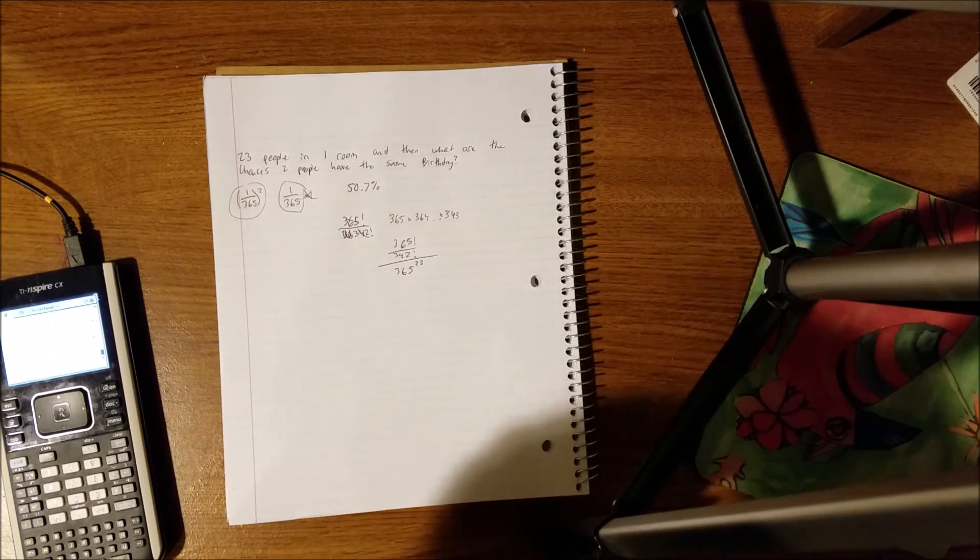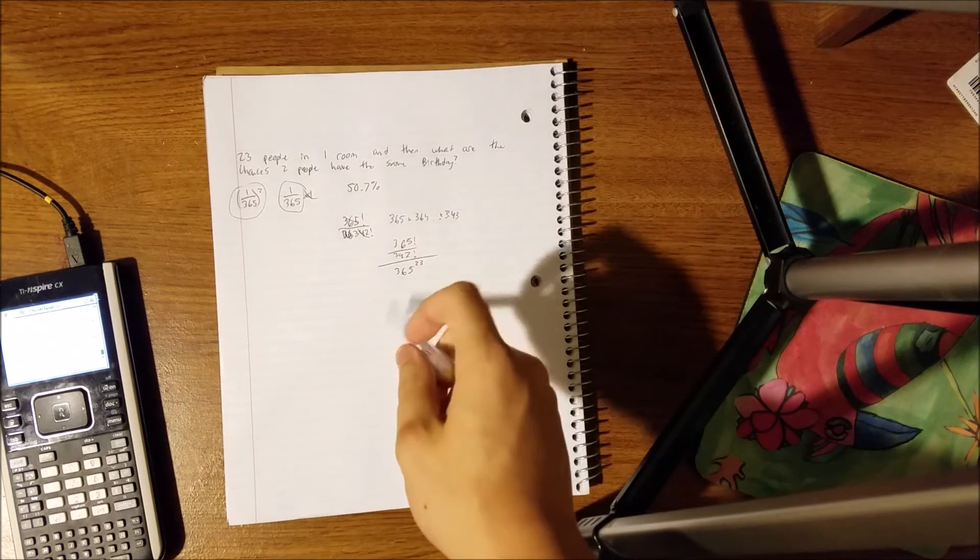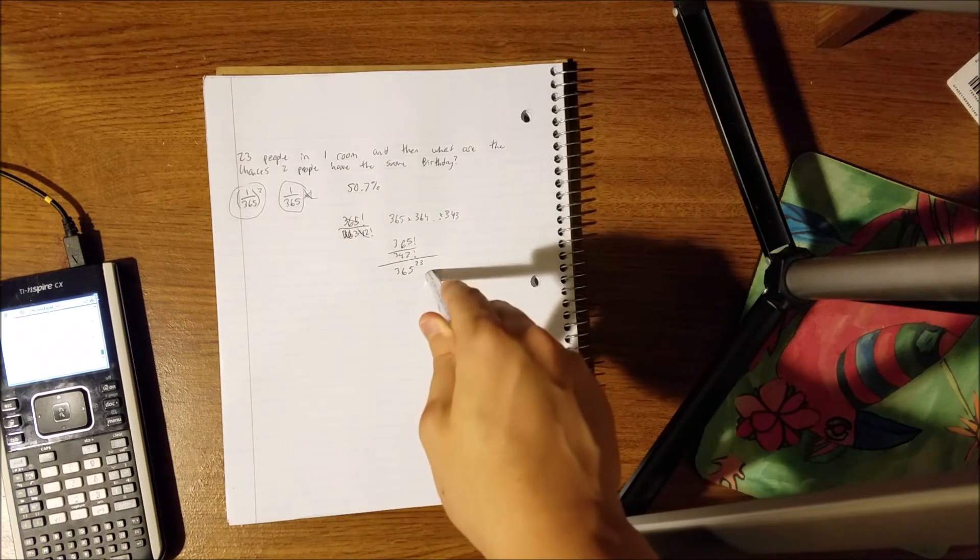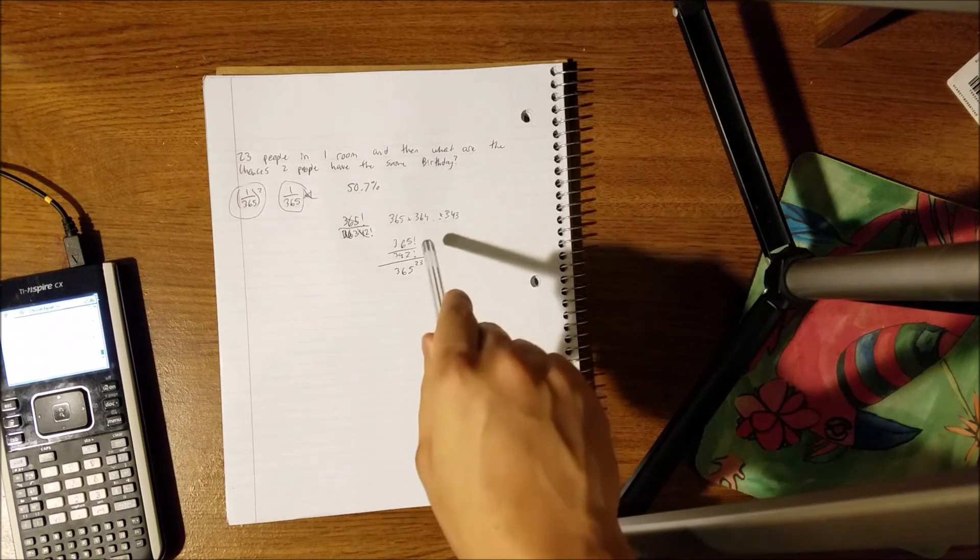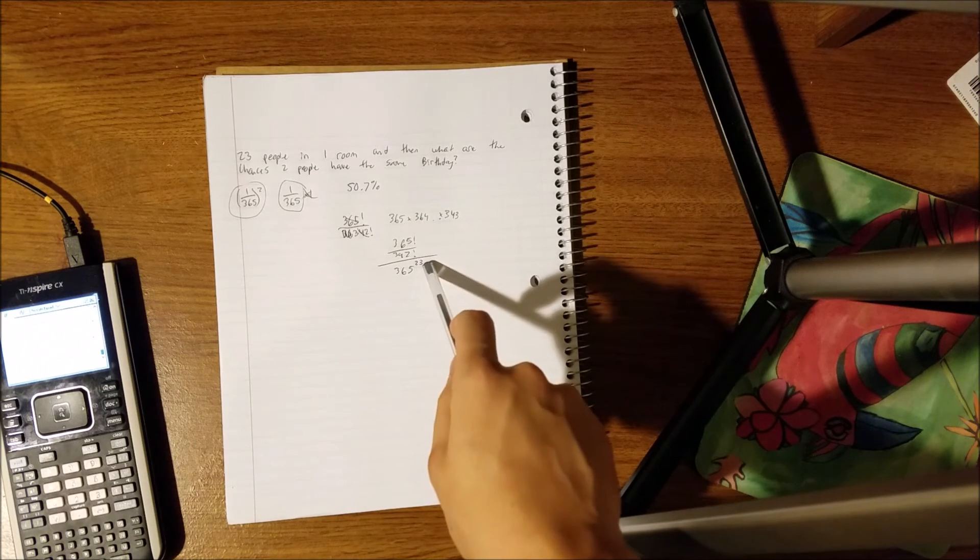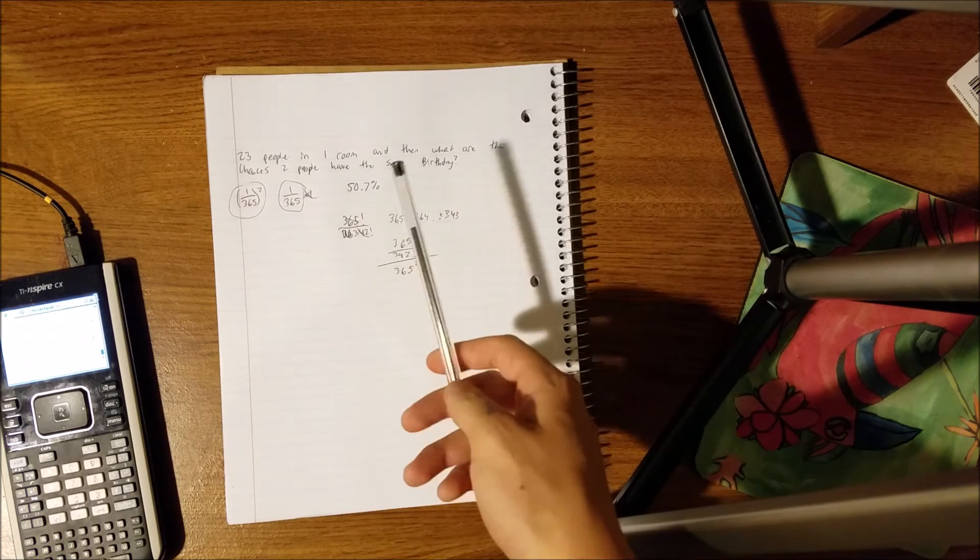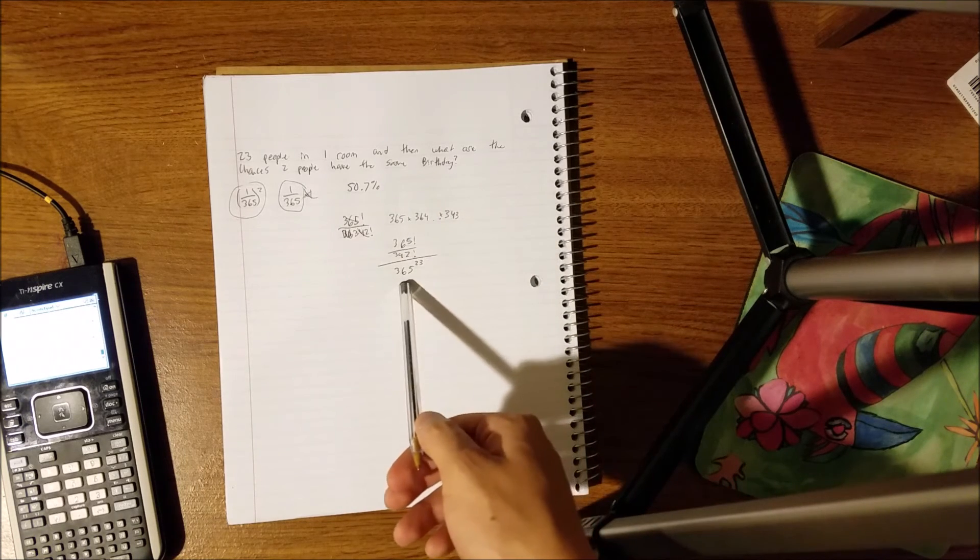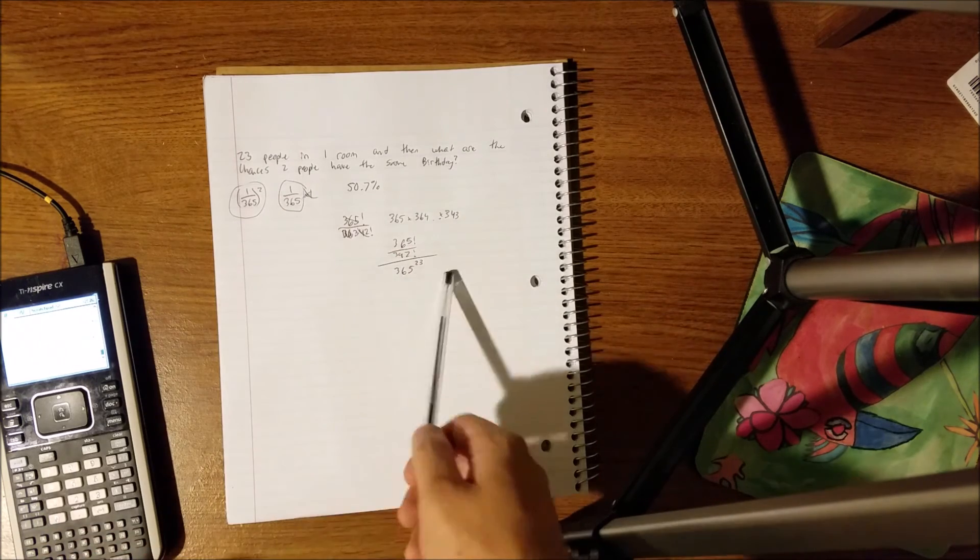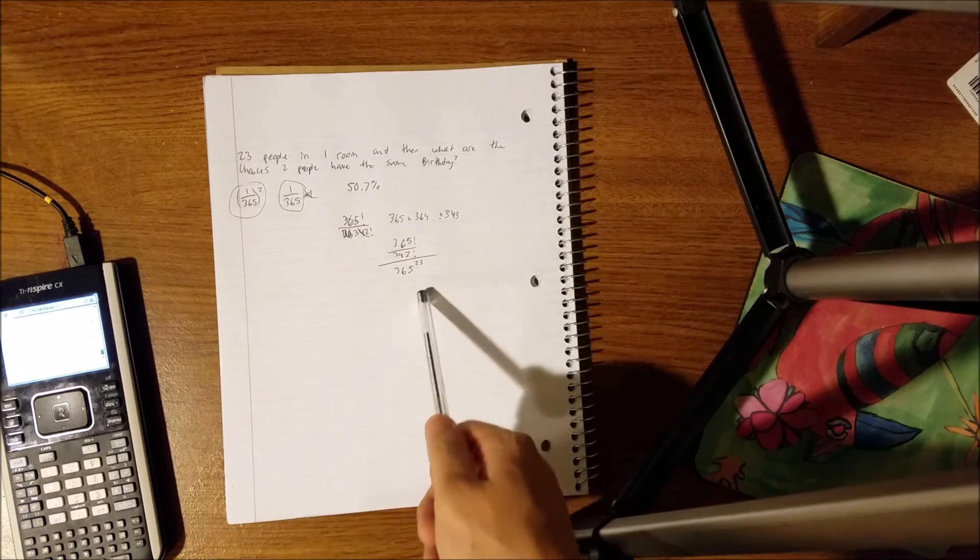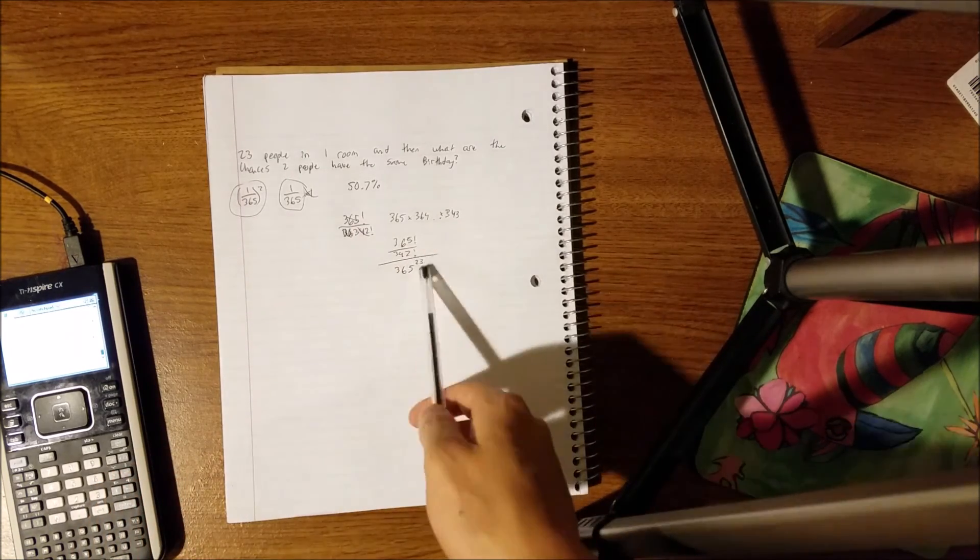because 365 to the 23rd is counting for all of the possible pairs for all of the people, which is 23 people. So 365 times 365 is going to give us all the possible birthday combinations for two people, and it's going to be giving us all the possible birthday combinations for 23 people.